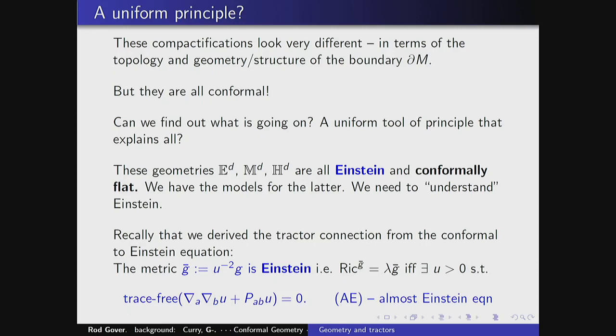The question is: is there a uniform principle explaining all of this? One thing you might observe is that these are model geometries — Euclidean space, Minkowski, and hyperbolic — and they're all Einstein and conformally flat. We know the models for conformally flat: in Riemannian signature, the conformal sphere; in Lorentzian signature, S¹ cross Sⁿ with its flat conformal structure. What we don't understand yet is the Einstein part, so we'd like to get that straight.